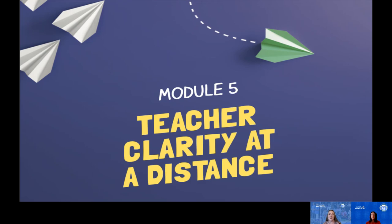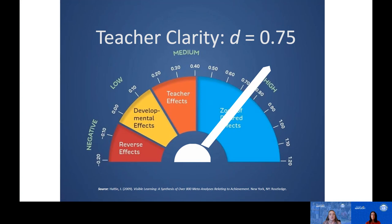Just like our students, we know the impact that clarity can have on understanding. When driving as adults without a map or GPS, we can feel lost or frustrated because we don't know where we're going or how to navigate to get there — the same is true for our students. Students need to know where they are going in their learning, how to get there, and the purpose behind their learning. Teacher clarity is really about the ability to communicate learning intentions and success criteria such that the teacher and students have a shared understanding of learning purposes and definitions of mastery. Teacher clarity has a large effect size of 0.75 — almost doubling the speed of learning.